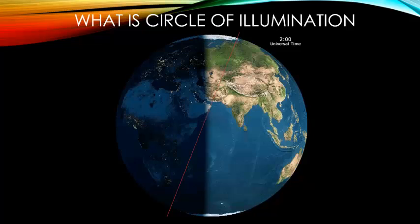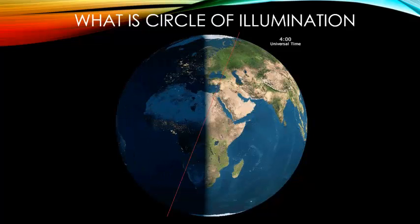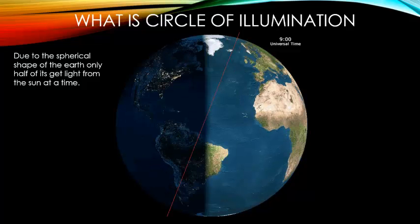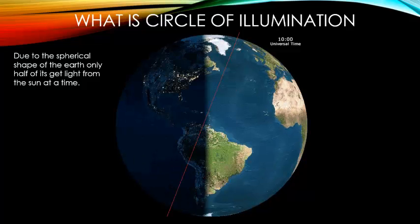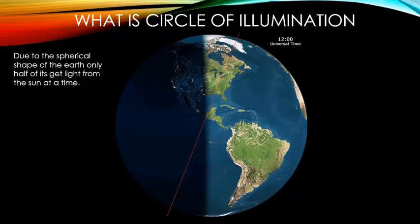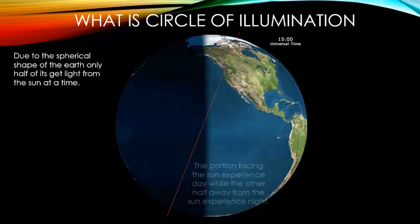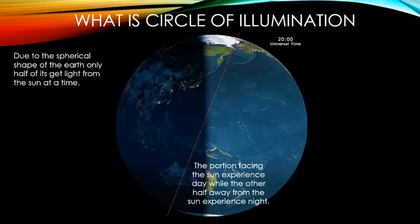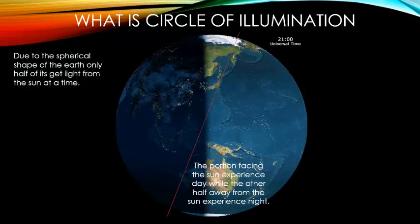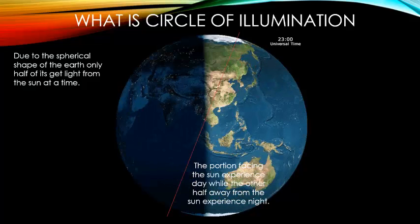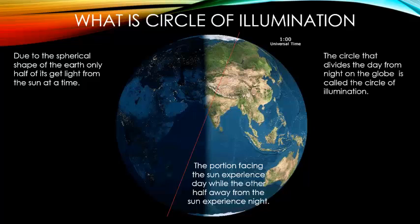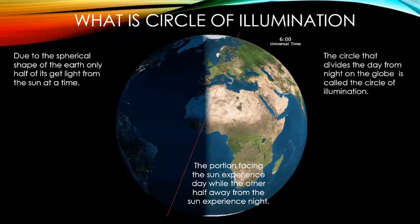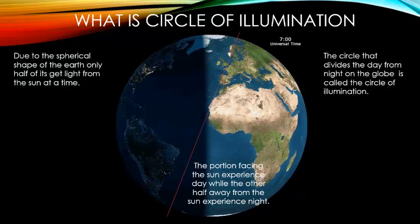What is circle of illumination? Due to the spherical shape of the earth, only half of it gets light from the sun at a time. The portion facing the sun experiences day while the other half away from the sun experiences night. The circle that divides the day from night on the globe is called the circle of illumination.